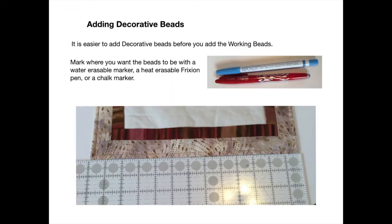If you need to add decorative beads, it's easier to add them before you add the working beads. So if you're making a family quilt, you always put the decorative beads on first because it's a smaller thing to work with. So let's decide where we want the beads to be. I usually use some sort of a ruler — this is the bottom panel of a family quilt. I lay my ruler down and use a friction pen or a water-soluble pen to mark where I want the beads to be, marked at every half inch.